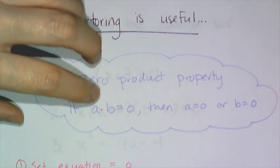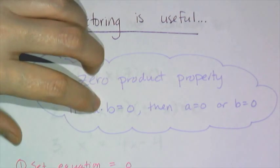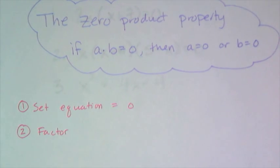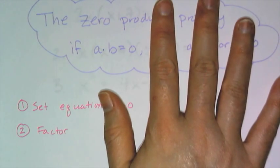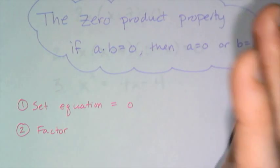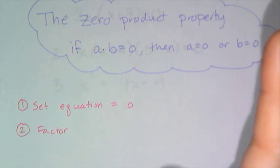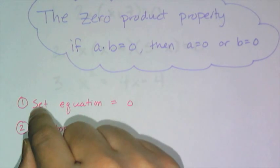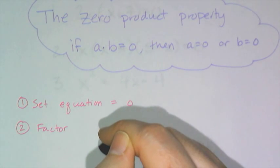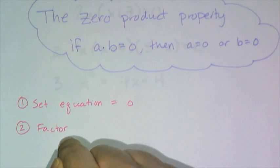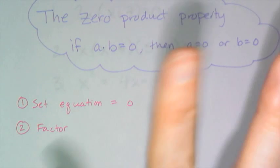So when you have to solve or find an x-intercept, you have to make sure that the equation equals zero, because the whole point of the zero product property is that you have things multiplied together that give you zero. If it's equal to four or something then you're in trouble, because we don't have a four product property. Make sure the equation is equal to zero. Now the second step is to factor.